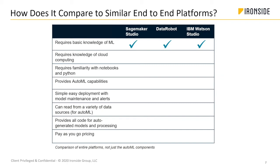SageMaker Studio had SageMaker notebooks and wanted to build out a whole platform. DataRobot, on the other hand, was strictly an AutoML tool initially — they beefed up deployment and acquired a data prep tool, so with all the modules it becomes end-to-end. IBM had their GUI coding optional modeler tool in the cloud paired with notebooks and then AutoAI. All three offer end-to-end platforms with AutoML capability, but they're pretty different.